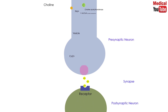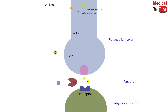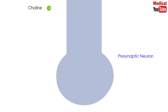Binding to a receptor leads to a biological response within the cell. Then this action is rapidly terminated, because acetylcholinesterase cleaves acetylcholine to choline and acetate in the synaptic cleft. Choline may be recaptured and reused, and the process is repeated over and over. This is the acetylcholine journey.